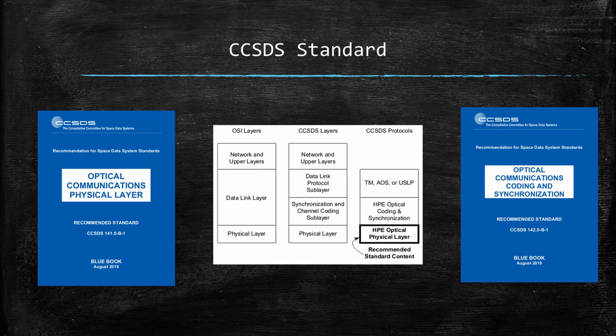For instance, the physical layer corresponds to the actual hardware for transmitting optical signals, while the data link layer deals with the protocol and management of point-to-point connections. CCSDS protocols such as Telemetry Advanced Orbiting Systems and USLP — Unified Space Data Link Protocol — address higher-level data transmission processes. They ensure that data is packaged and synchronized correctly, allowing for error checking and recovery, which is crucial given the error-prone nature of optical links. By adhering to these standards, space missions can achieve reliable and efficient communication, crucial for the success of both manned and unmanned missions.